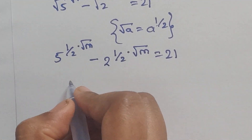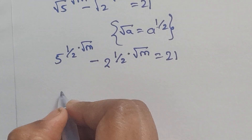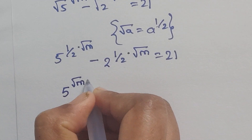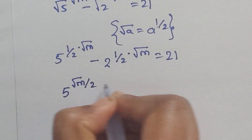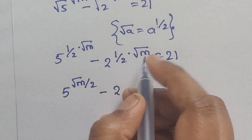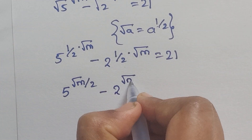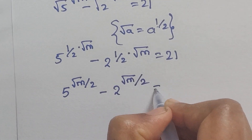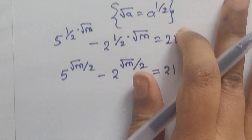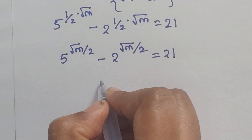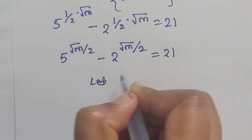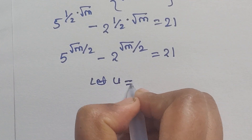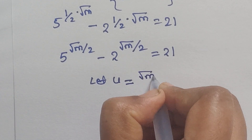Now multiply these two terms in the exponents: 5 to the power of square root of m over 2, minus 2 to the power of square root of m over 2, equals 21. Now let us consider u equal to square root of m over 2.